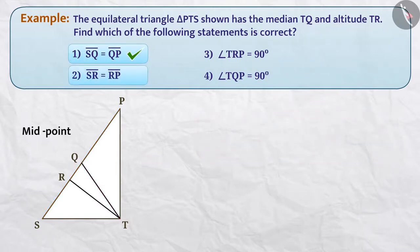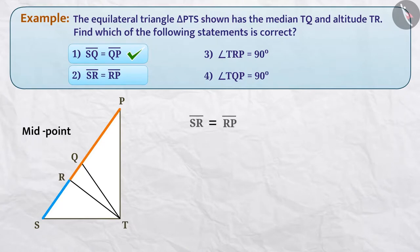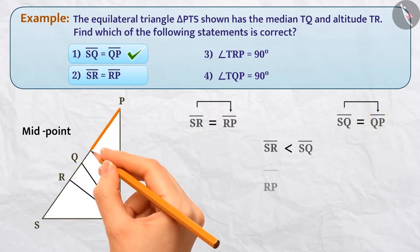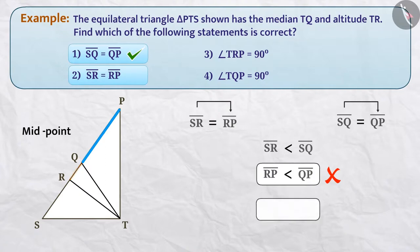Now let's talk about the second option. Suppose the lengths of line segment SR and line segment RP are equal. As you can see, SR is smaller than SQ. If this option is correct, then we can put RP in place of SR. Similarly, since SQ is equal to QP, we can put QP in place of SQ. So, is the inequality RP smaller than QP true? Looking at the figure, we can say that RP is greater than QP. From this, we can say that SR equal to RP is an incorrect option.